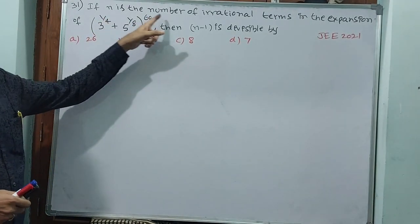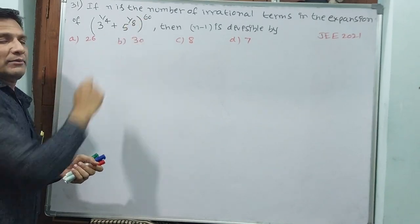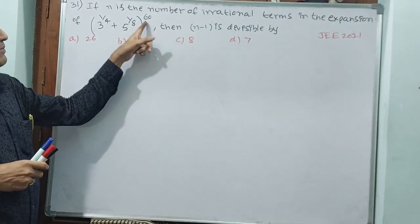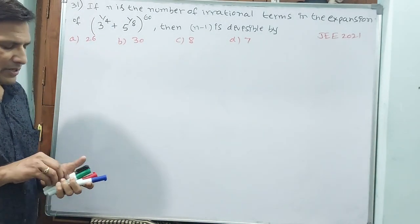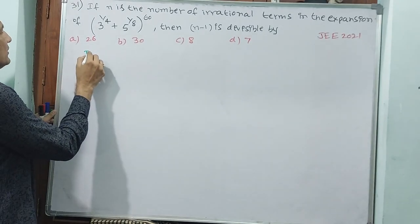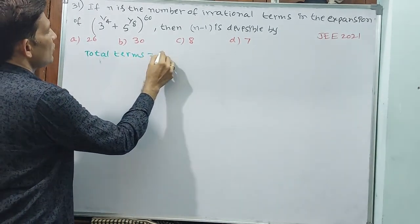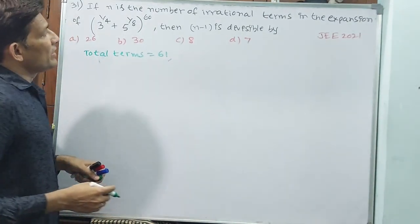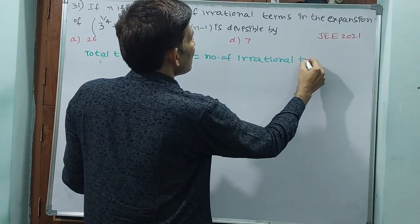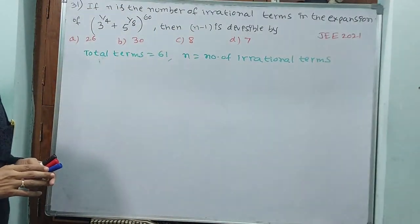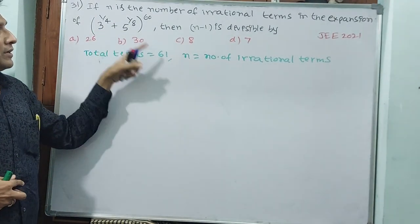See question number 31: n is the number of irrational terms in the expansion. Normally we would take n as 60, but here we don't, because 60 is just the power. When we expand this, total how many terms will come? Total terms is equal to 61. n is equal to number of irrational terms — we have to find the number of irrational terms. Both rational and irrational terms may be there; we will separate them.